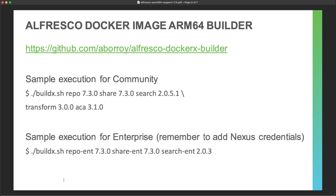The script is pretty simple. You just need to run the script and identify the Docker images you want to produce — for example, repository image with its version, share with its version, search, and so on. You can produce all these different artifacts locally for your architecture. The same applies for enterprise images, but with the ENT suffix. You end up with Docker images named exactly as expected by your Docker Compose templates.